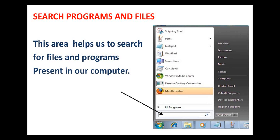How do you do it? First, click on the start button. This menu pops up, and over here you can see a box which I have indicated with the help of an arrow. You can type the name of the program or file that you are trying to search.